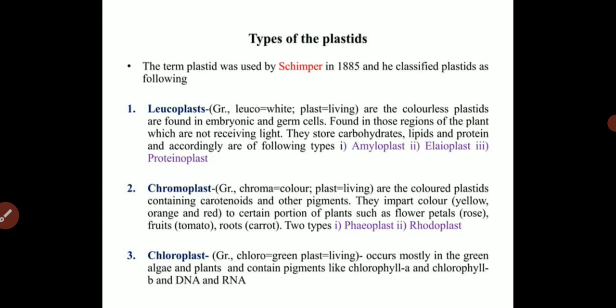The third leucoplast type is proteinoplast, meaning protein-containing plastids. The second category is chromoplast — chromo means color. The colored parts of the plant, such as different-colored flowers, fruits, and vegetables, contain chromoplast. The color differences found in different species are controlled by this chromoplast.